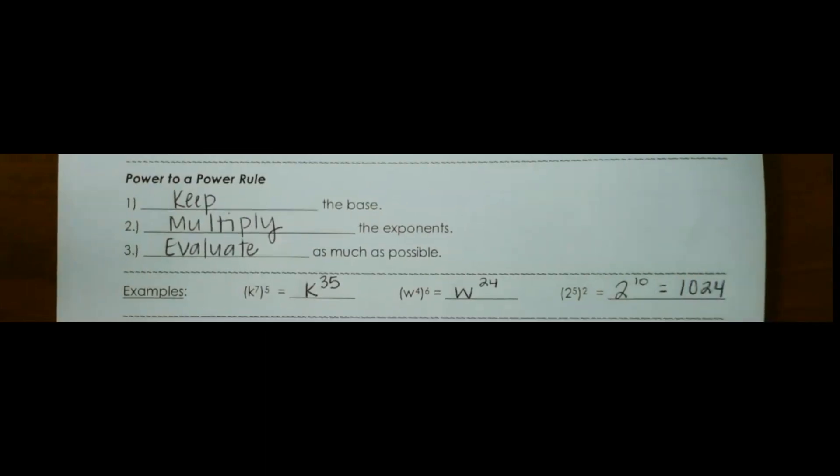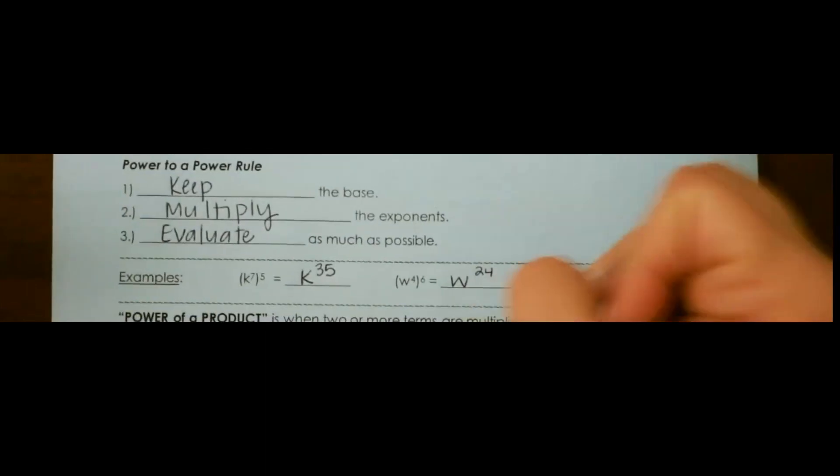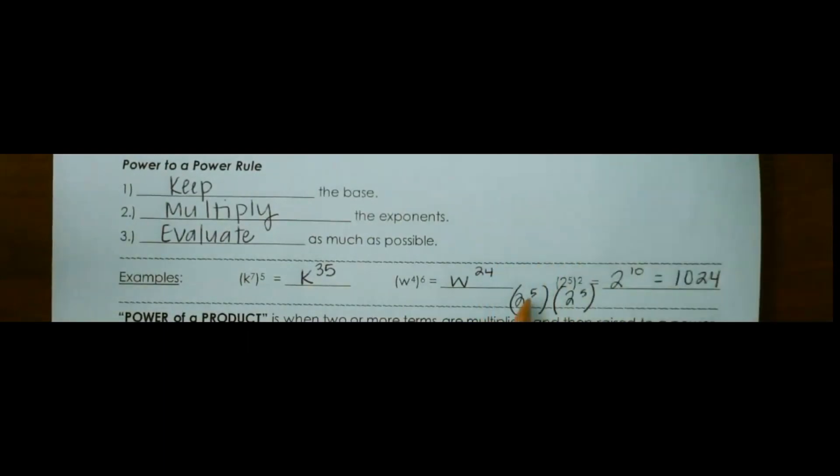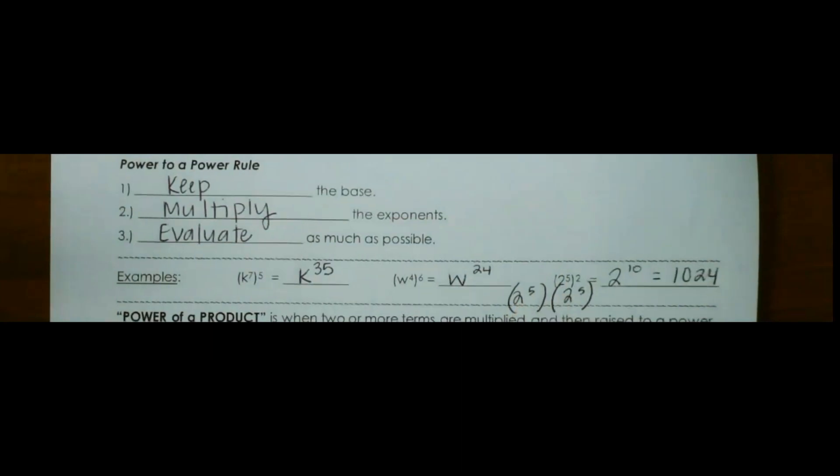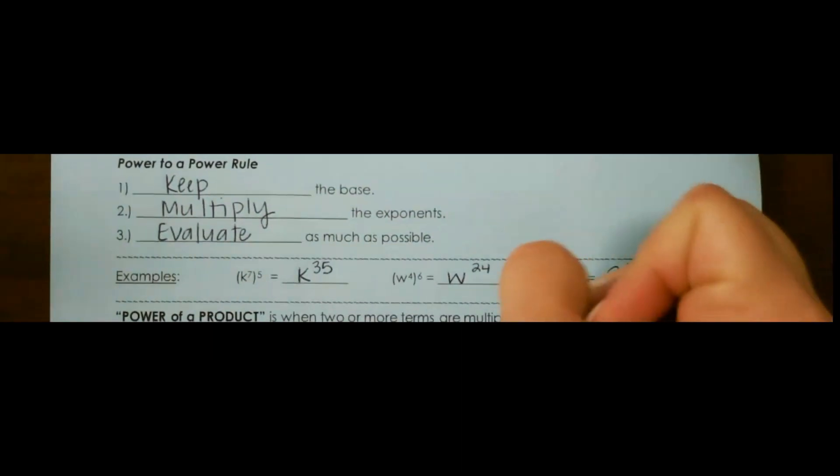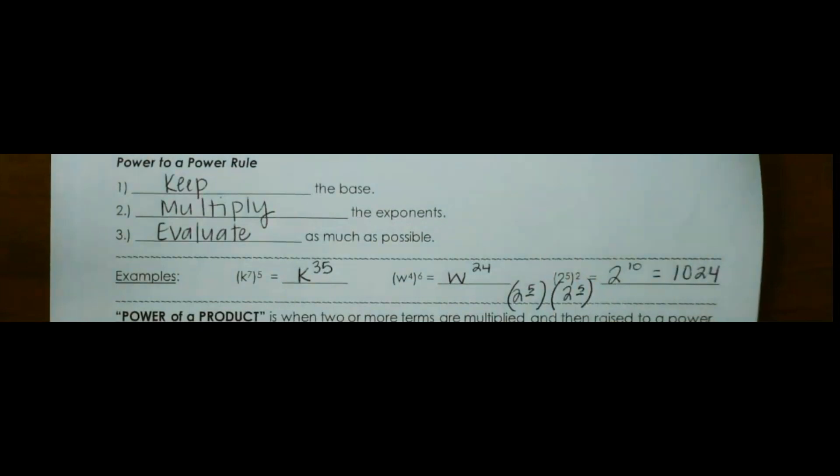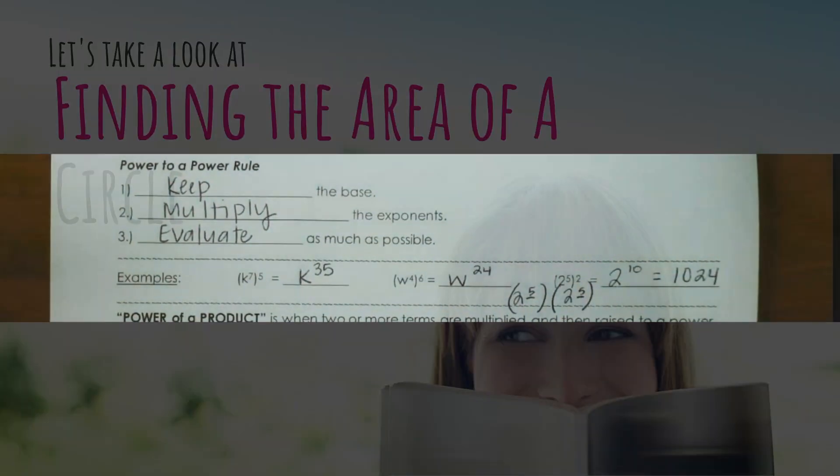To show this in expanded form, just so you can see it, 2 to the 5th power to the 2nd power would be like having 2 of 2 to the 5th power. So that would be 5 times 2, which is 10, so that's why we multiply our exponents.